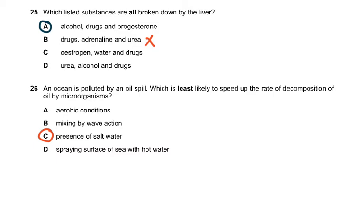Oestrogen, water, and drugs - water is not broken down in the liver. Water is never broken down anywhere in the body except in the enzyme reactions of hydrolysis. Urea, alcohol, and drugs - again, urea here was the key thing. Urea was the wrong thing because urea is made in the liver, it's not broken down in the liver.